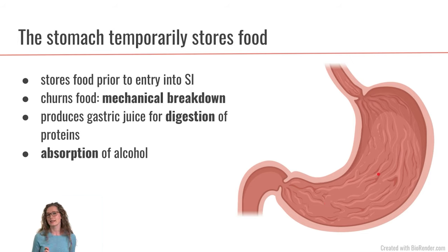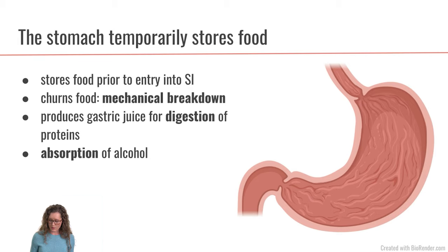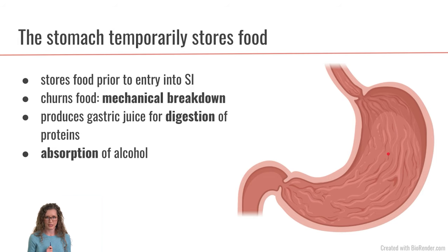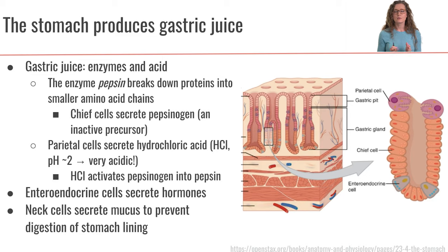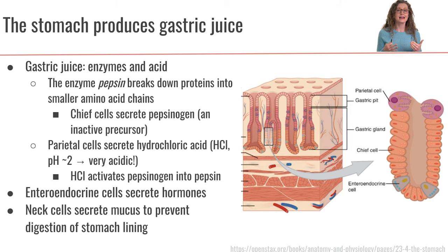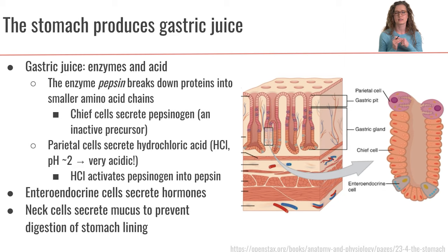Additionally, the stomach is going to produce gastric juice, which is very important especially for the digestion of proteins. There is also a little bit of absorption that goes on in the stomach — specifically, we can absorb alcohol through our stomach. The gastric juice is a cocktail of enzymes and acids. The enzyme is called pepsin, and pepsin is going to break down the big proteins in our food into smaller amino acid chains — into smaller peptides.